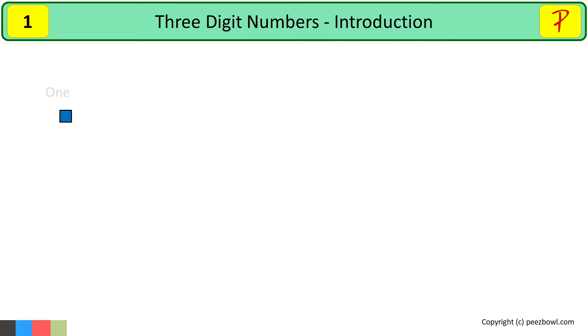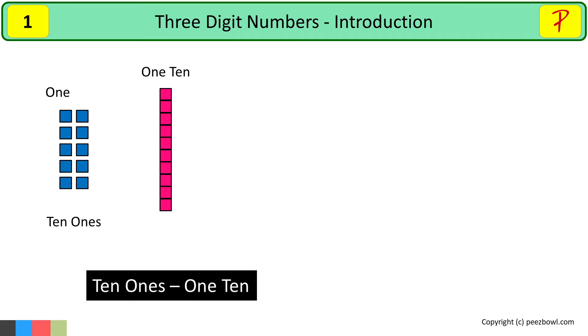Here we have one and now I will bring nine more such ones, so that in total we have 10 ones here in blue squares. Now I will group all these 10 ones together so that it will look like a line. So this group is called as one 10. Here we can say that 10 ones is equal to one 10.